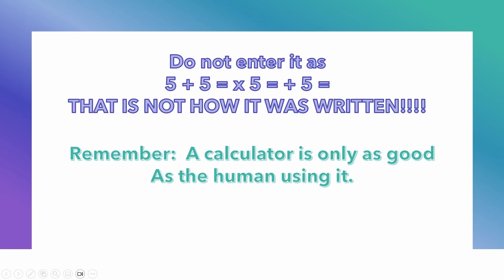Another thing to stress: do not enter it as 5 plus 5 equals, times 5 equals, plus 5 equals. That is not how it was written. The equation has one equal sign, yet people feel like they have to hit the equal sign after every operation. Even with a scientific calculator, entering it that way will give you the wrong answer. The calculator is only as good as the person using it. Just enter it exactly as written, with one equals at the end.